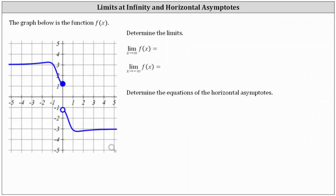We're asked to use the graph of f of x to determine the limits and determine the equations of the horizontal asymptotes. The x-axis is a horizontal axis — positive infinity is to the right, and negative infinity is to the left.